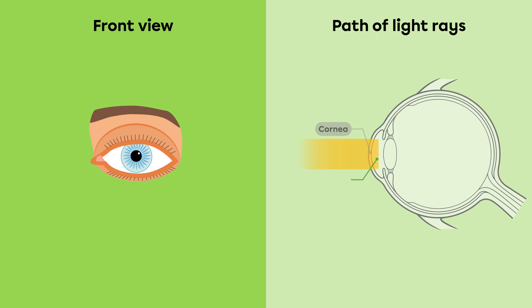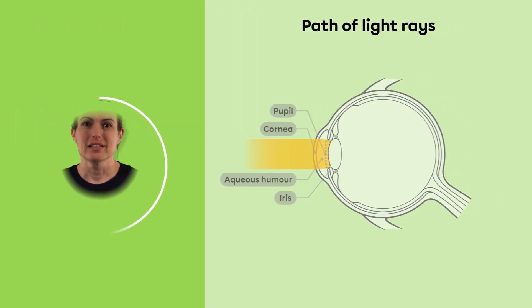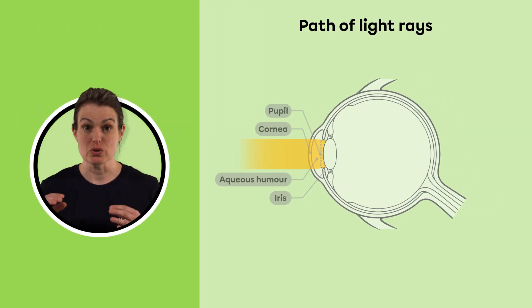The rays then pass through the aqueous humor and the pupil, which is the hole at the center of the iris. The light rays then pass through the transparent domed lens. The lens deflects the rays and converges them on the retina, passing through the vitreous humor.